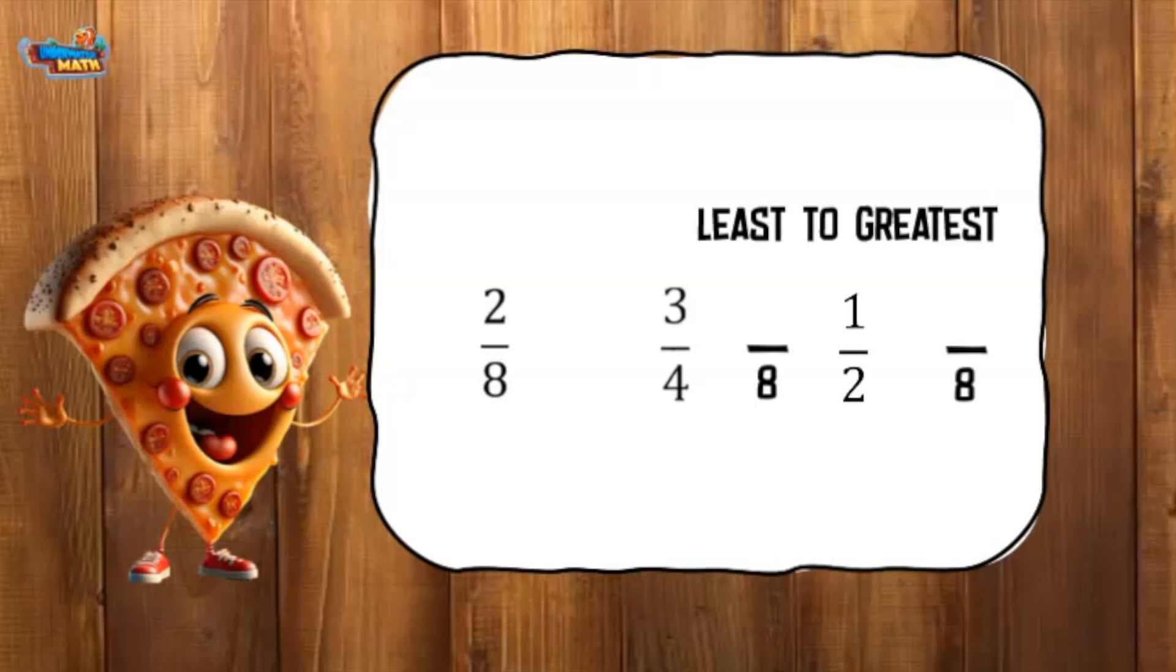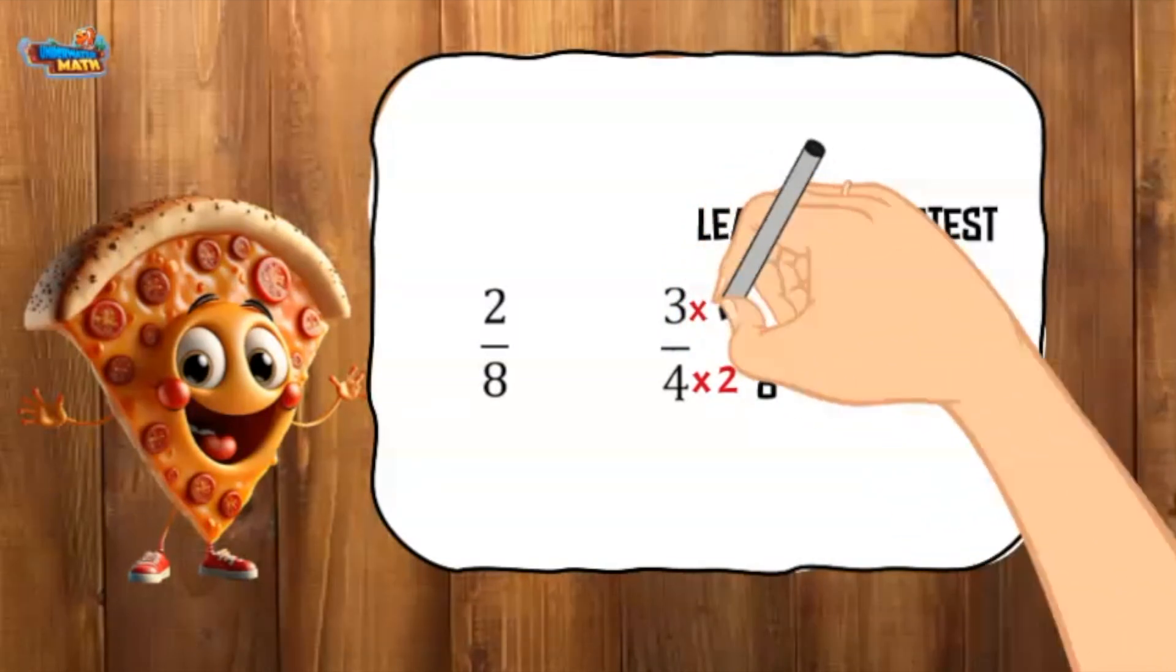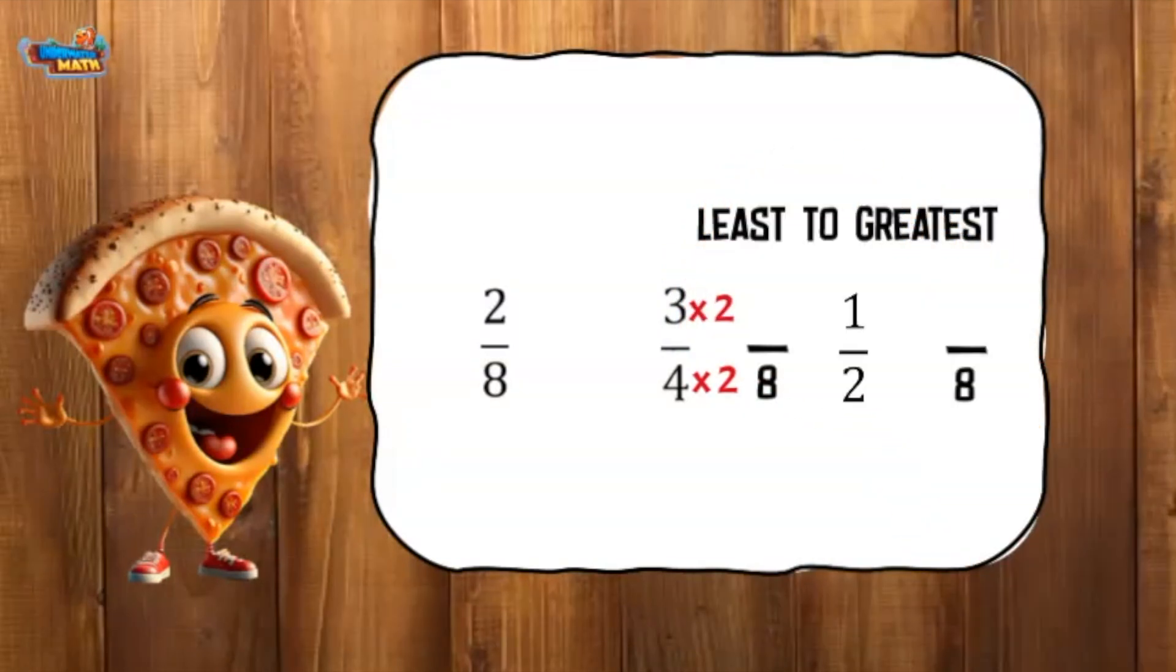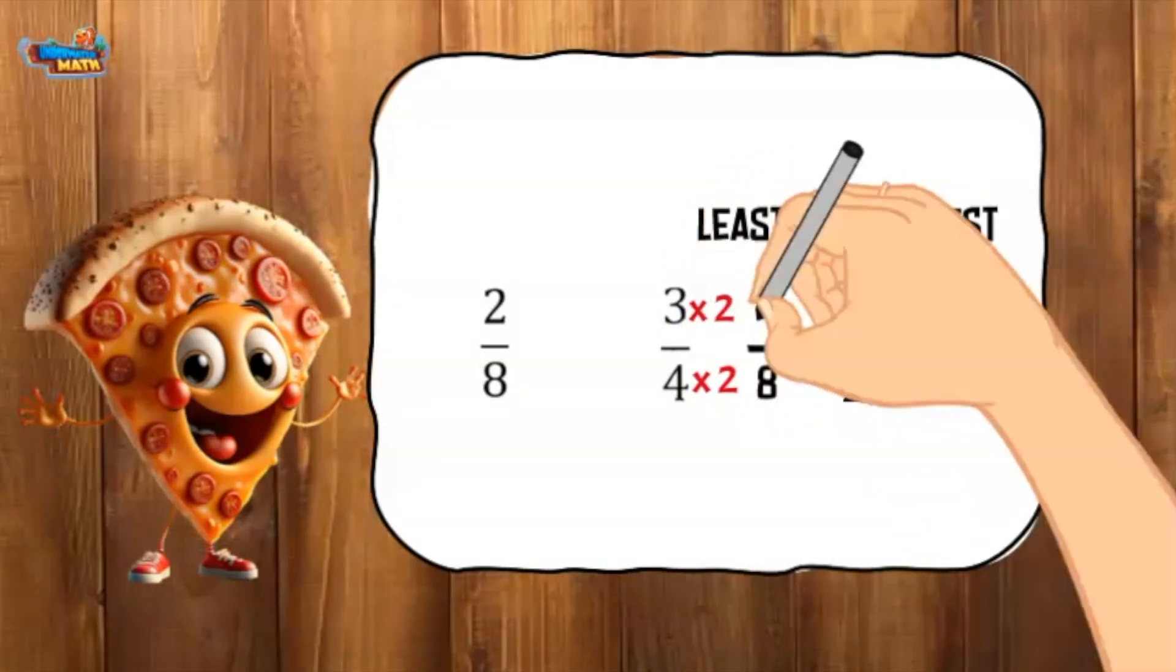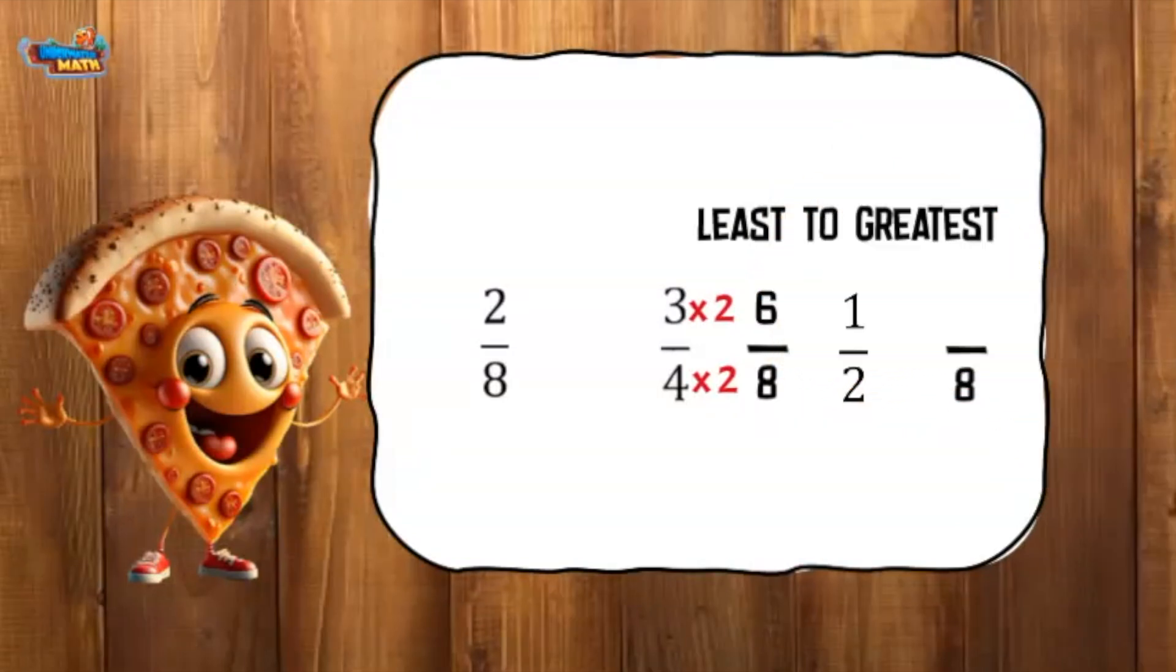On to the second fraction. Two times four equals eight. I multiplied two by the bottom, so I need to multiply two by the top. Two times three equals six. The equivalent fraction is six eighths.